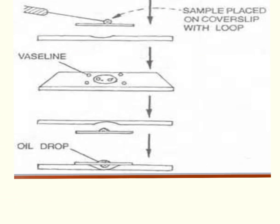The procedure for making a hanging drop consists first of having a flame loop, a cover slide, and a concave slide. Using a toothpick, place a small amount of Vaseline on each of the four corners of the cover slide.